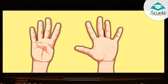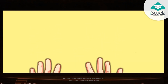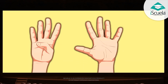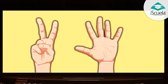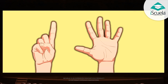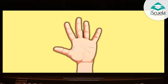One by one they increase. Let us all say cheese. Eight fingers are less than nine. Seven are less than eight. Six fingers are less than seven. Five are less than six.